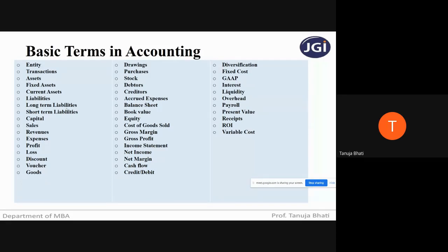Short-term liabilities — you can also call them current liabilities — are those where the firm is expected to pay off the debts within a year. Where are short-term liabilities shown? They are shown in the balance sheet on the liability side, which is the left-hand side. Students, you need to know where each of the accounting terms falls in the financial statements.